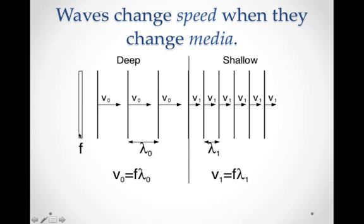If we have a source over here, and this is a ripple tank, the ripple tank goes from deep over here and at some point transitions and becomes shallow instantaneously at this junction. Our source, tapping in the ripple tank, would determine the frequency. The frequency is determined by this tapping.